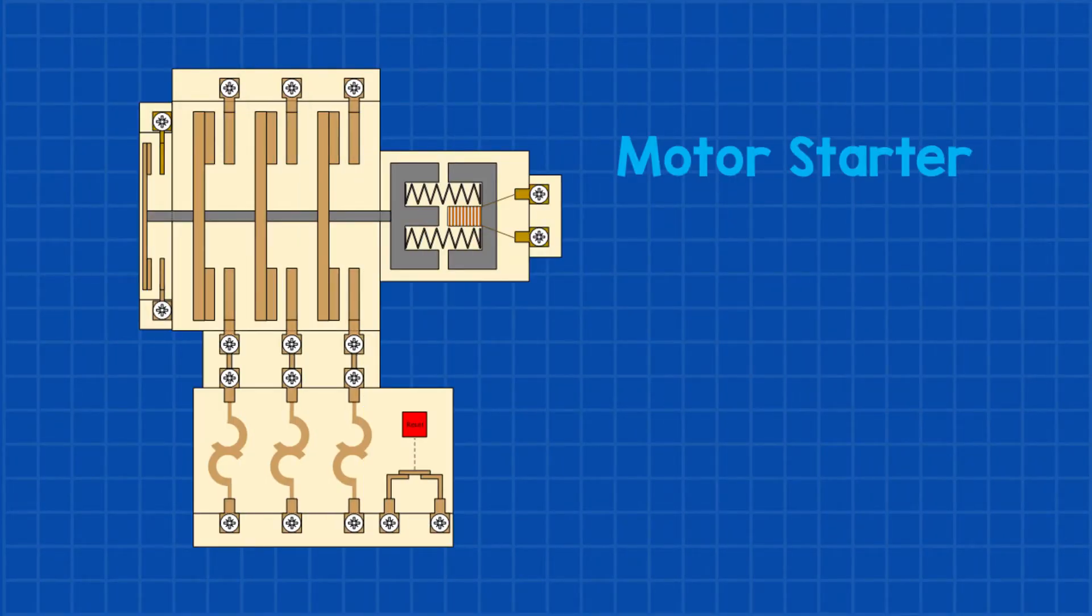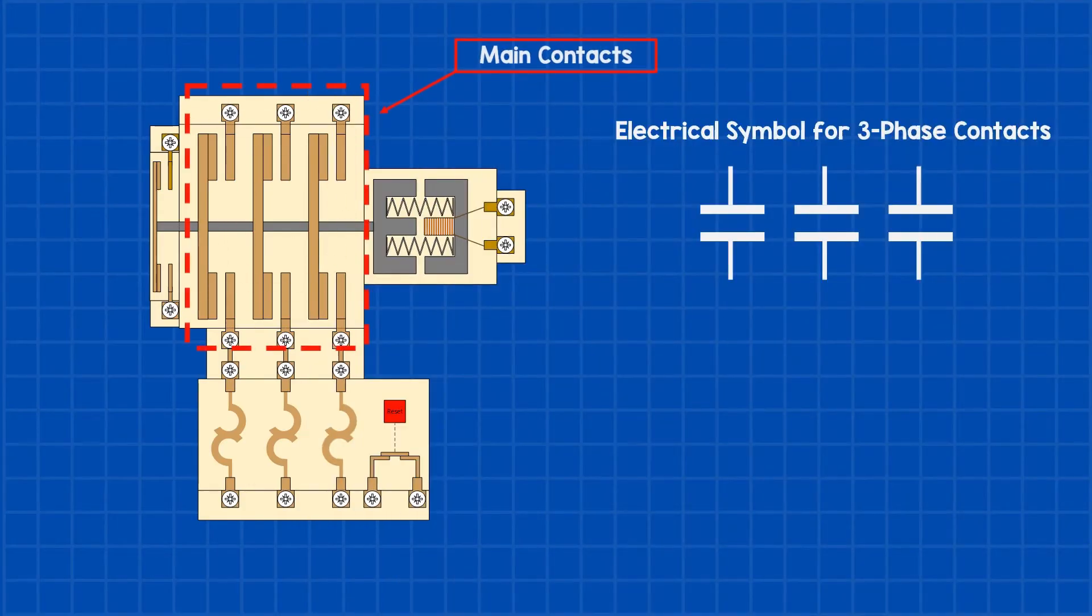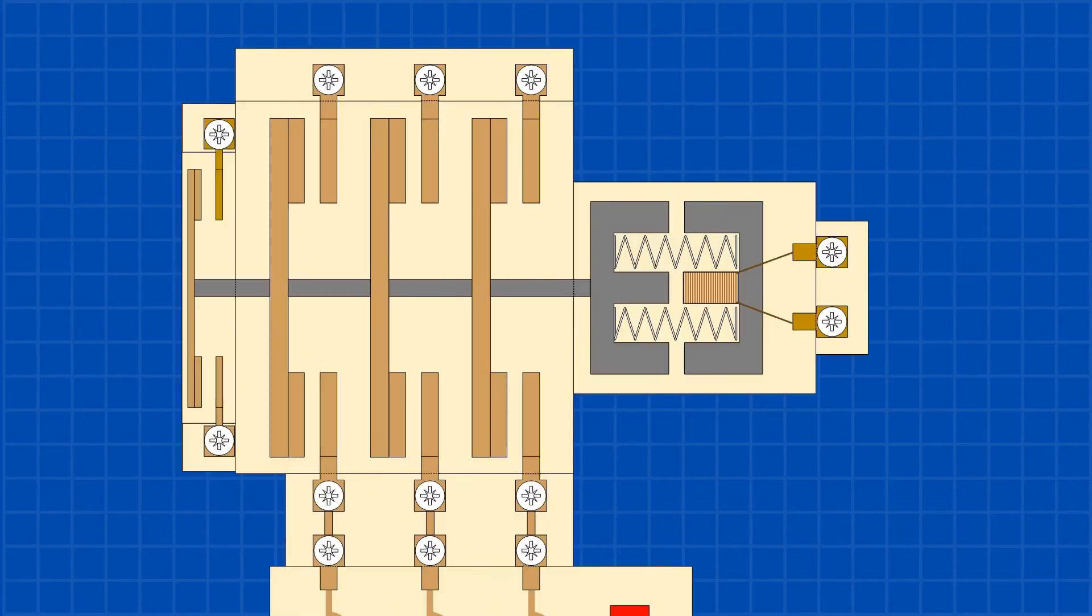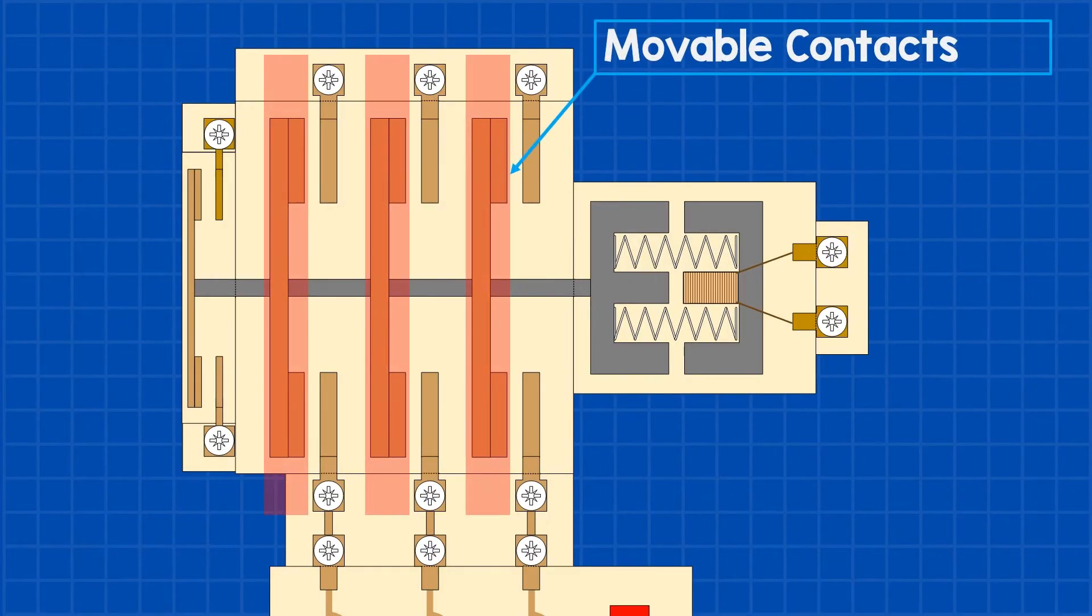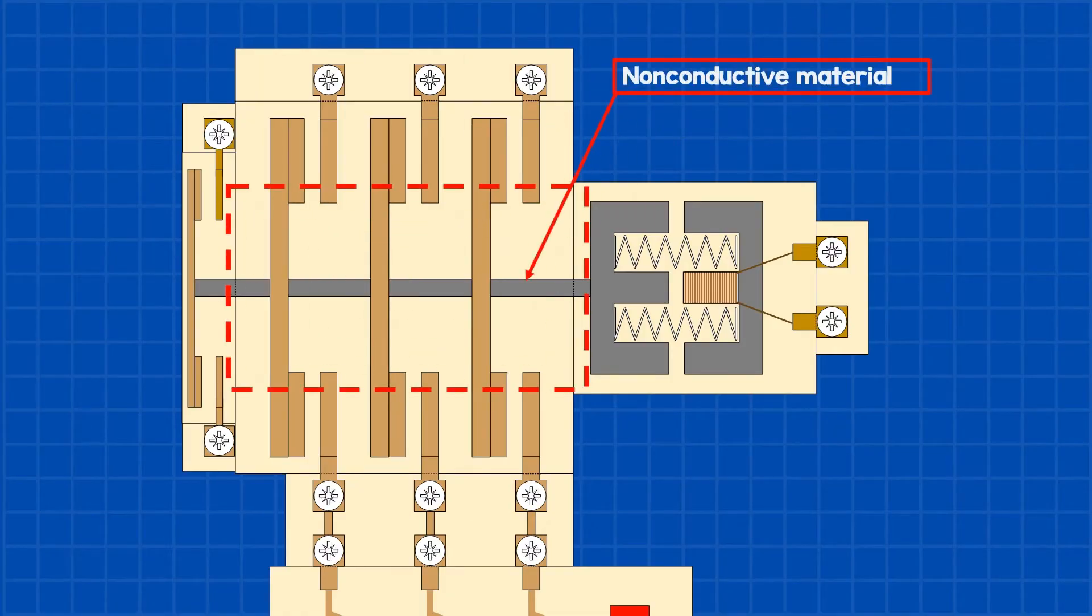But how does a motor starter work? First, the motor starter contains three sets of contacts that deliver power to the motor. Each set of contacts consists of a stationary and a movable contact. The movable contacts are attached to the coil with non-conductive materials, like fiberglass or reinforced molded plastic.